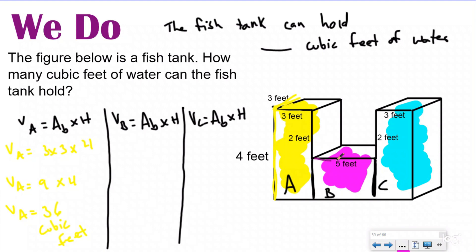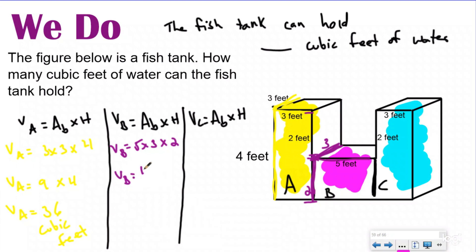For prism B, using my 'p sign' vertex, I know the total height was 4 but I don't want to cross over prisms. Since this part is 2 and the total yellow part was 4, from here to here is also 2 — so my height for prism B is 2. My length is 5, and my width opposite parallel is 3. Five times 3 is 15, times 2 is 30 cubic feet for prism B.